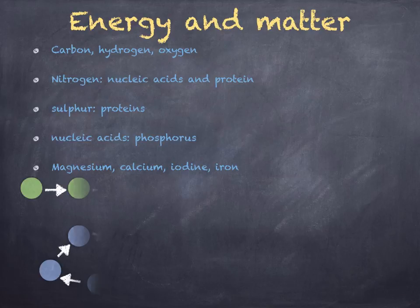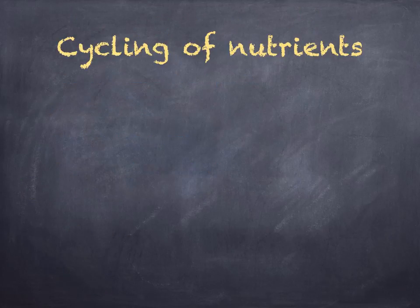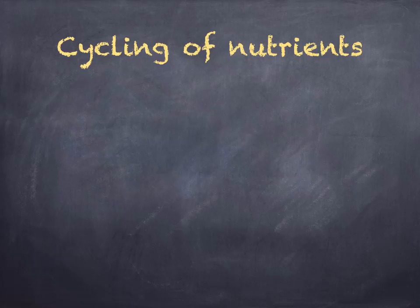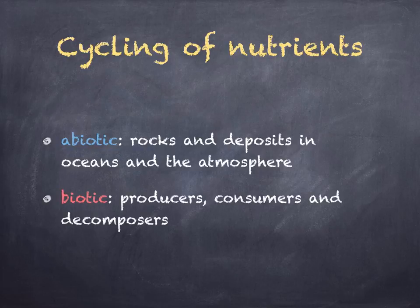The flow of matter is cyclical, whilst the flow of energy is linear. There's a limited supply of nitrogen available to living organisms, so it must be recycled so it doesn't run out. Most nutrient cycles have got two components: the abiotic, which includes the rocks, deposits in the ocean and the atmosphere; and biotic, which includes producers, consumers, and decomposers. These help in some way to convert one form of the nutrient into another.